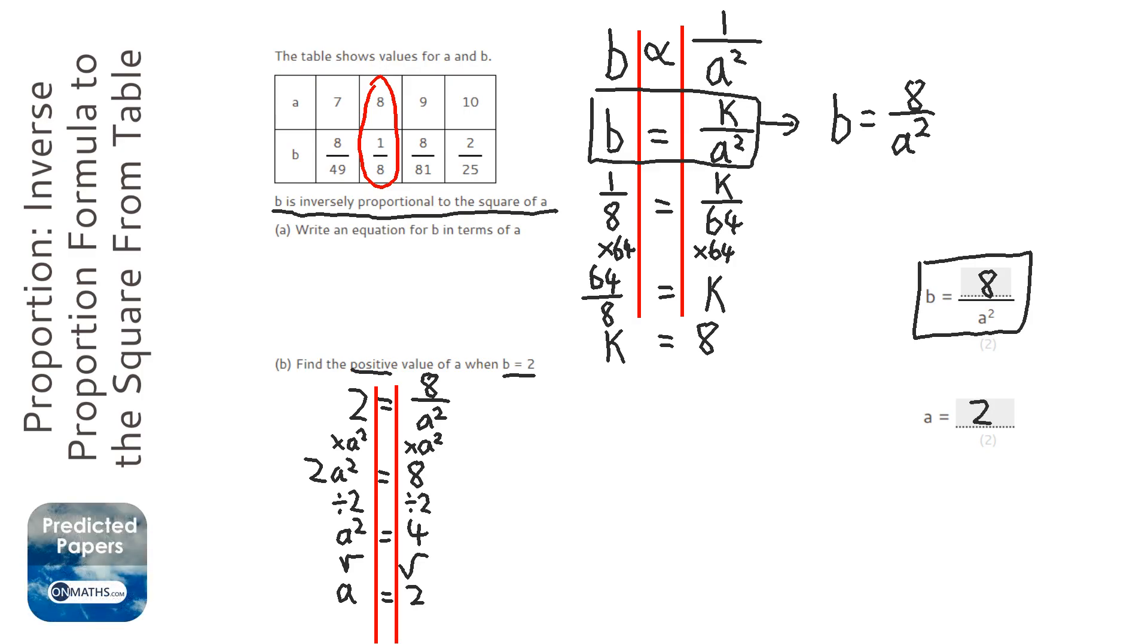So if I put a and a is 2 into it, into the answer to question a, it would be 8 over 2 squared, which is 4. So 8 over 4, which is 2. So b equals 2.